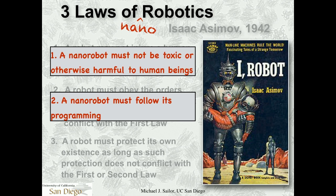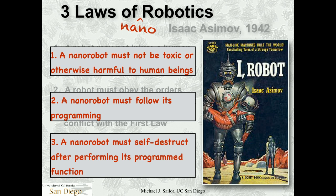The second law is obeying orders, which really means following its programming. The programming for a nanoparticle is not done in lines of code — it's done in molecules, in the chemistry we impart in our structures. The third law is different from Asimov's: if the robot is big, you can flip a power switch, but if it's a nanoparticle, you can't control it after it's gotten loose. So nanomaterials have to self-destruct — they have to dissolve in the body or in the environment after performing their programmed function.